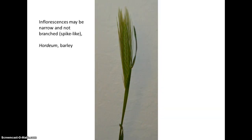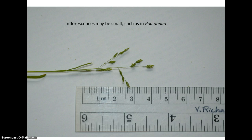Other times the entire inflorescence is compact and not branched, so we say they're spike-like, as in this barley. And sometimes the inflorescences can be quite small, as in this annual bluegrass, Poa annua.